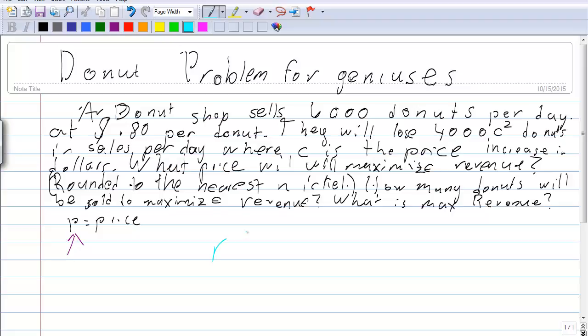We're going to say that the revenue equals the price times the number of donuts sold per day minus the donuts that they will lose if they increase the price. And then instead of writing C-squared, we're going to want to change this to P minus 0.8 squared to keep it with one variable because we can only have one variable for graphing.